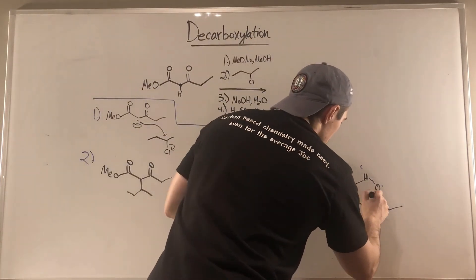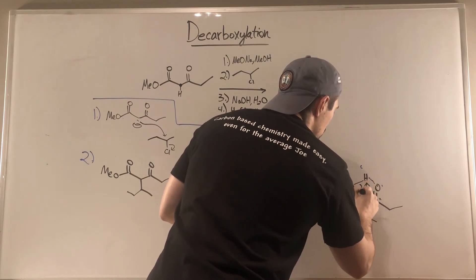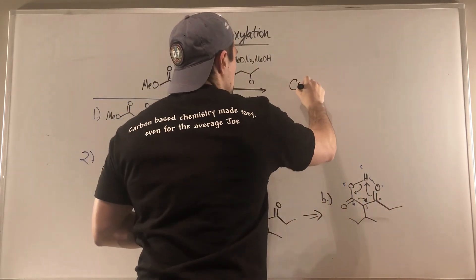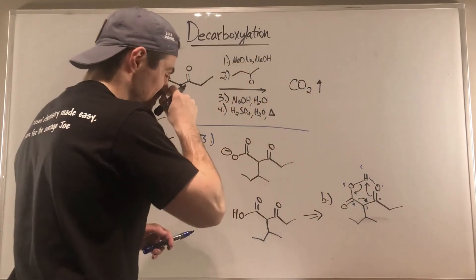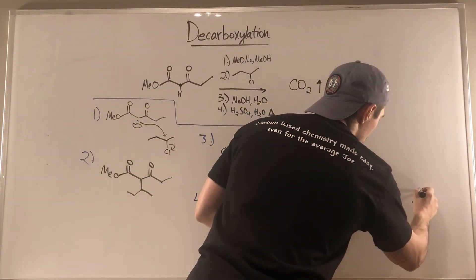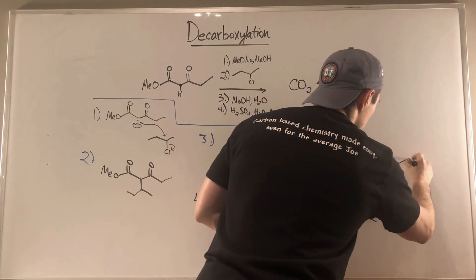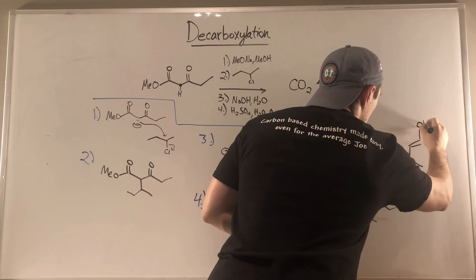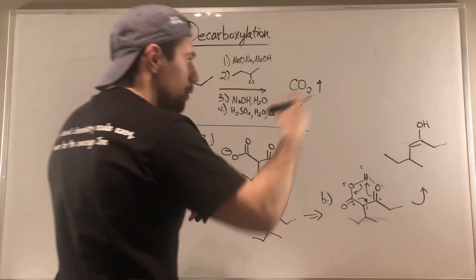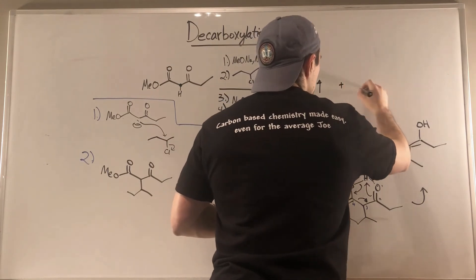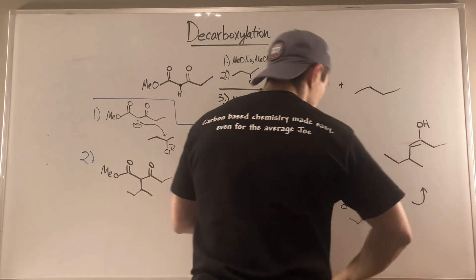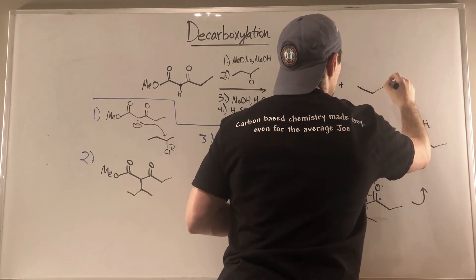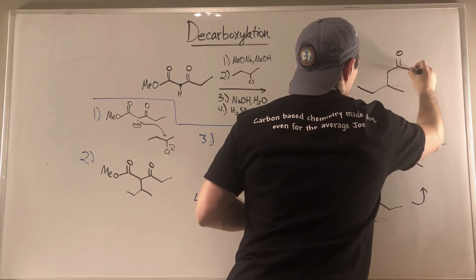So obviously we knew we were going to produce some gaseous CO2. Then this is going to look a bit weird — I'm going to draw this up here just like this. Remember, we form an enol. We know it flips to the carbonyl. Even though this isn't drawn like a straight chain, everything's connected to the correct place.